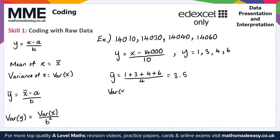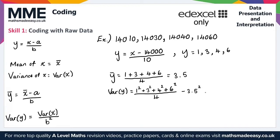For the variance of y, we calculate (1² + 3² + 4² + 6²) divided by 4, then subtract the mean squared, so minus 3.5 squared. Putting this into the calculator gives a variance of y equal to 3.25.